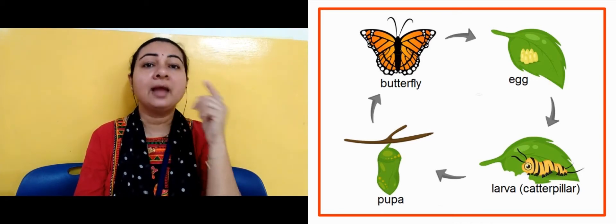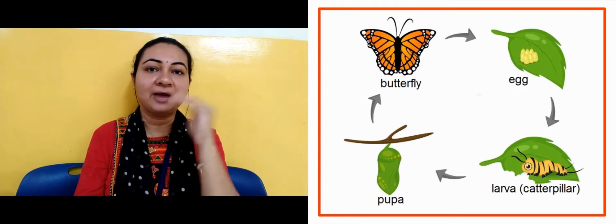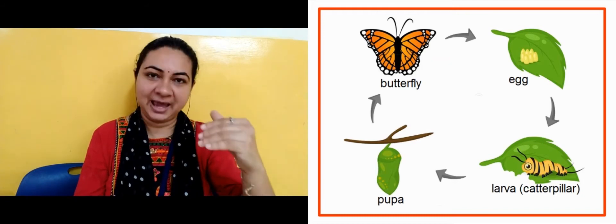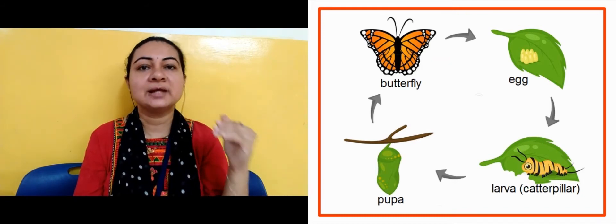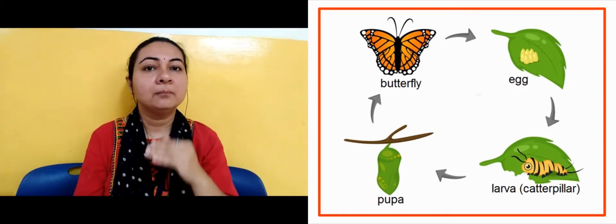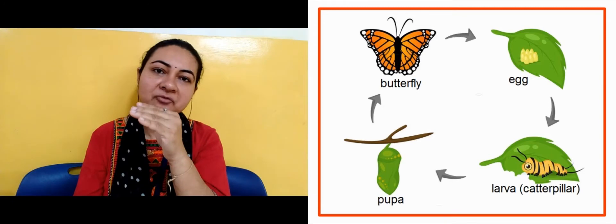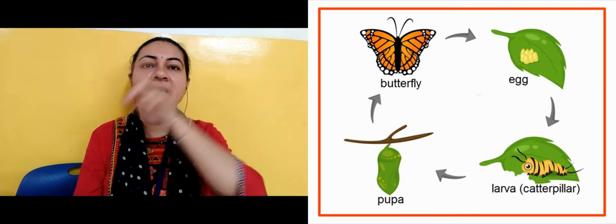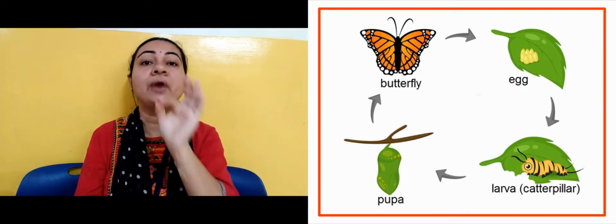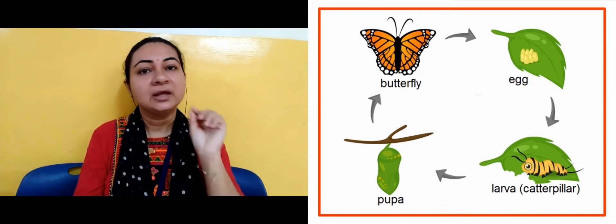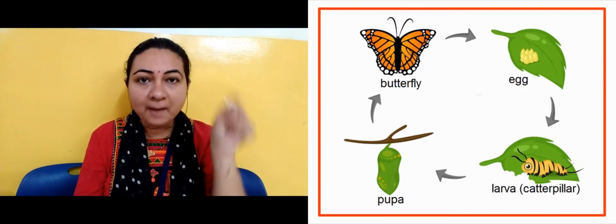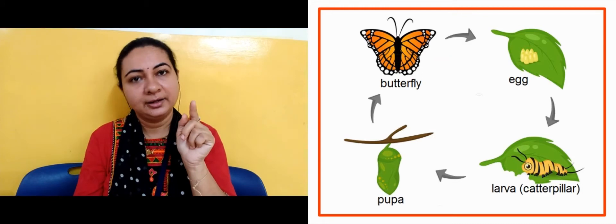After the butterfly, you can see an arrow going back to eggs again. A butterfly can lay eggs, and the cycle continues: egg, larva or caterpillar, pupa, then butterfly again. This is the cycle of a butterfly.